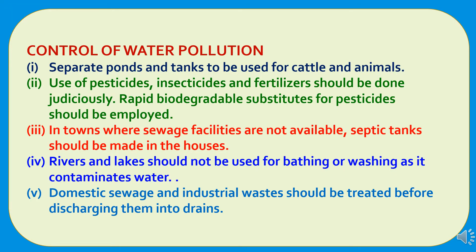To control water pollution: separate ponds and tanks should be used for cattle and animals; use of pesticides, insecticides, and fertilizers should be done judiciously, and rapidly biodegradable substitutes for pesticides should be employed; safety tanks should be made in houses where sewage facilities are not available; rivers and lakes should not be used for bathing or washing as it contaminates water; and domestic sewage and industrial waste should be treated before discharging into drains.